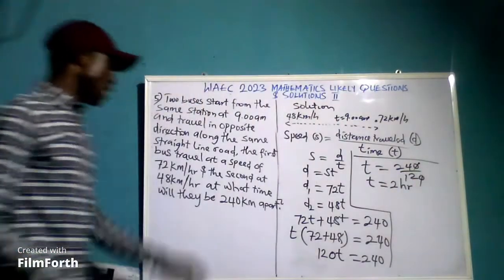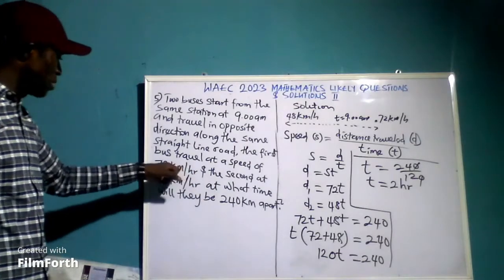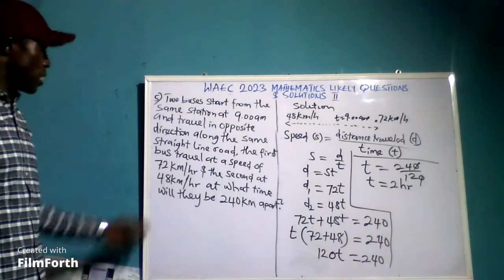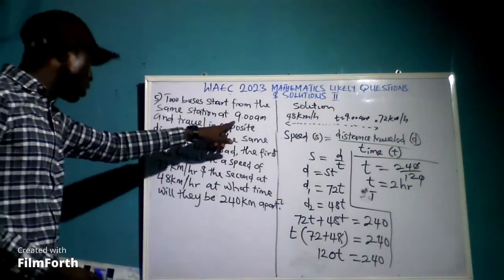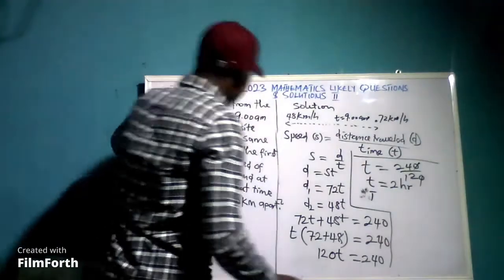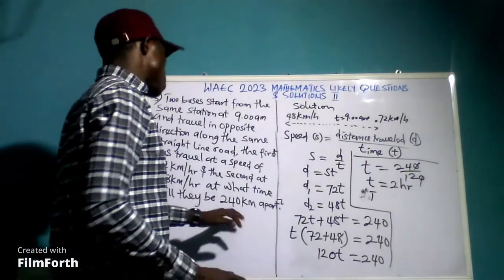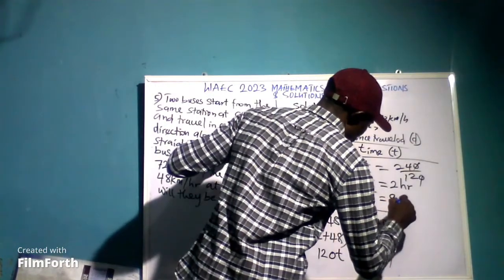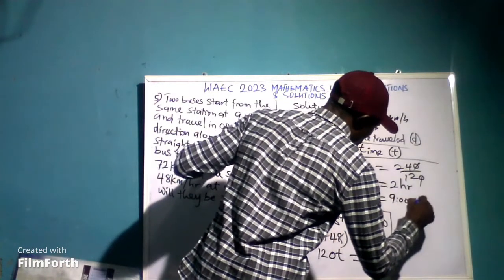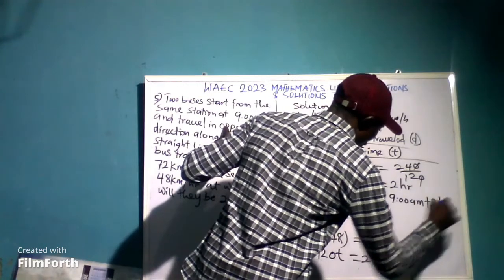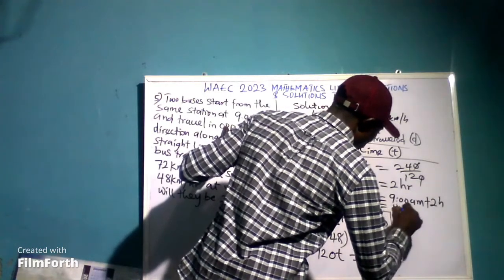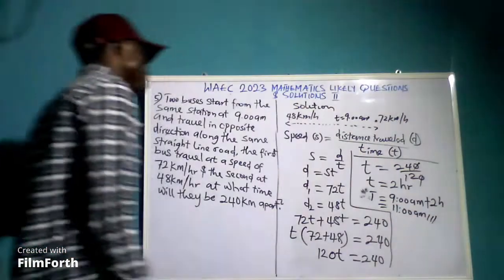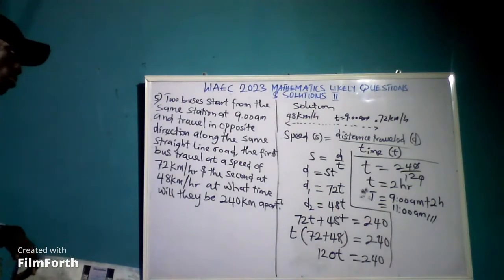Since we were given the speeds in kilometers per hour, the time T is in hours. So both buses will be 240 km apart after 2 hours — that is, at 11am. Thank you.